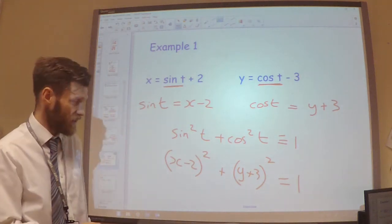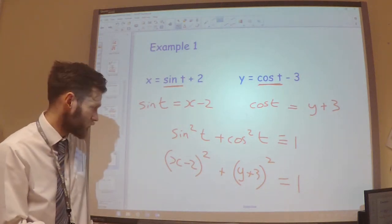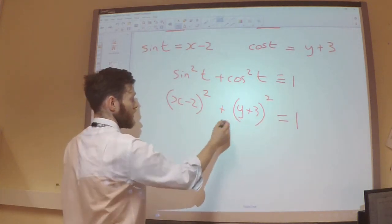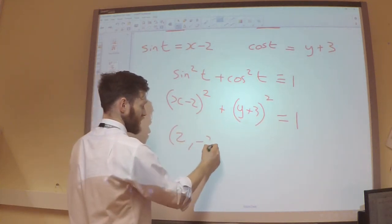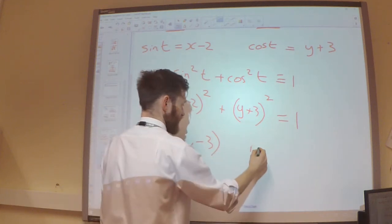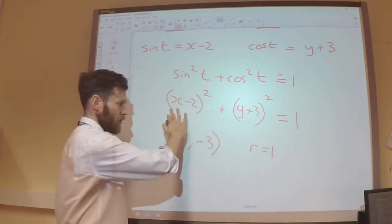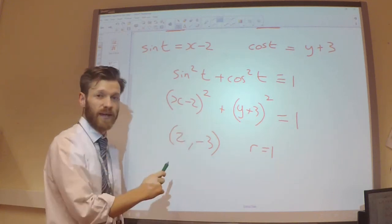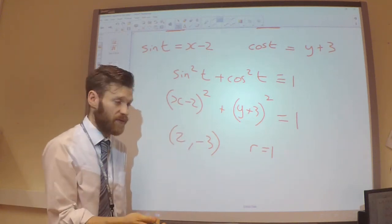And hopefully you should recognise that. It's a circle. It's a circle with centre 2 comma minus 3, and with radius 1. So I'm not going to expand anything out there. I'm just going to leave it like this. This is my curve in Cartesian form.